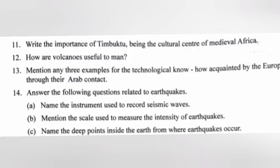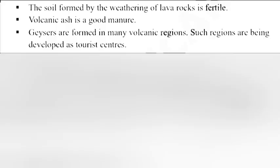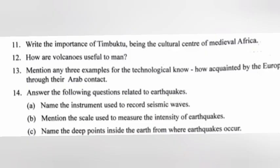Question 12: How are volcanoes useful to man? Answer: The soil formed by the weathering of lava rocks is fertile. Volcanic ash is a good manure. Geysers are formed in many volcanic regions, and such regions are developed as tourist centers.